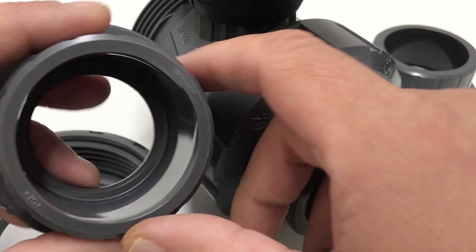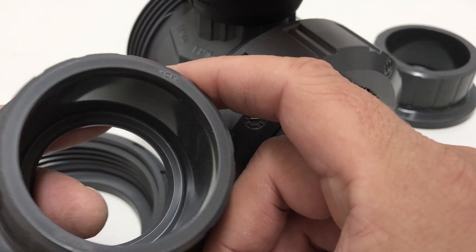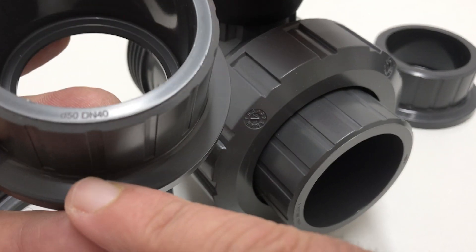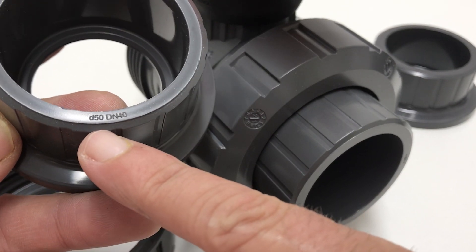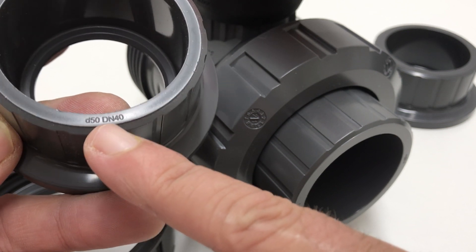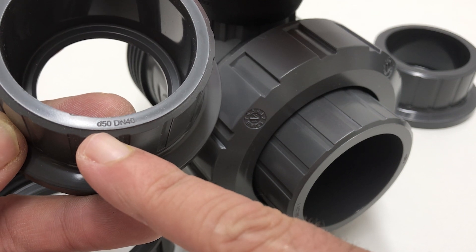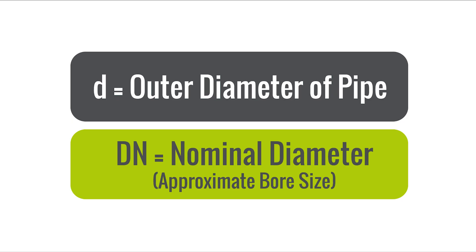Here I have a valve end taken from a metric valve. Let's have a look at these markings — the end is marked as D50, meaning it is compatible with metric pipe with an outer diameter of 50 millimeters. The DN 40 means it belongs on the DN 40 valve body. So DN references the nominal diameter of the bore, and the letter D references the outer diameter of the pipe.